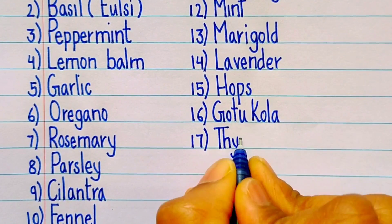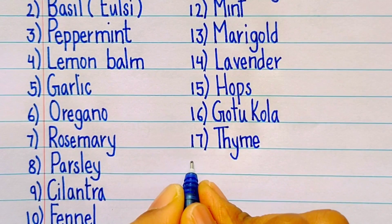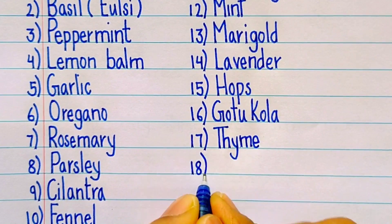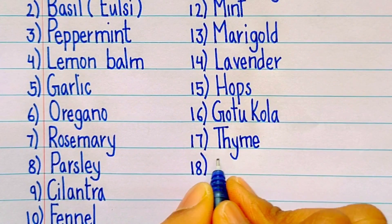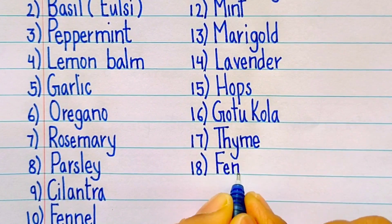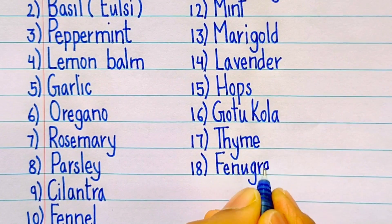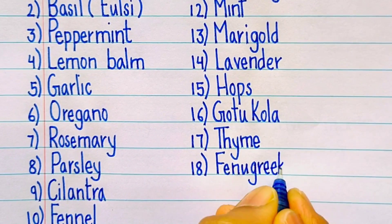Seventeenth one is thyme, T-H-Y-M-E. Eighteenth is fenugreek, F-E-N-U-G-R-E-E-K.